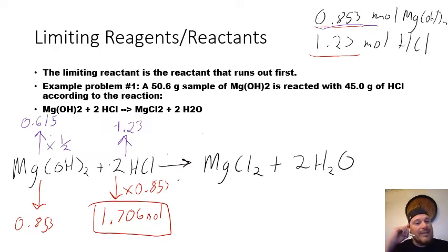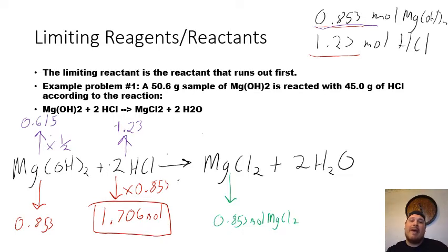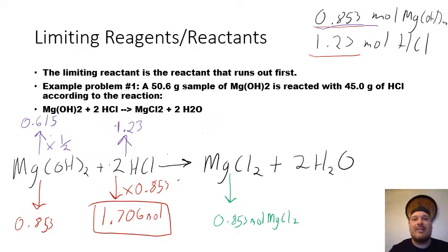Now I'm going to predict the number of moles of magnesium chloride. Using the moles of magnesium hydroxide and the molar ratio: it's a one-to-one ratio between magnesium hydroxide and magnesium chloride, so I just multiply by one — it's still 0.853 moles of magnesium chloride. There's some behind-the-scenes stoichiometry happening, but I'm using the molar ratio on paper. Now I'm going to convert this amount of moles into grams of magnesium chloride. The conversion factor to convert moles to grams is molar mass.